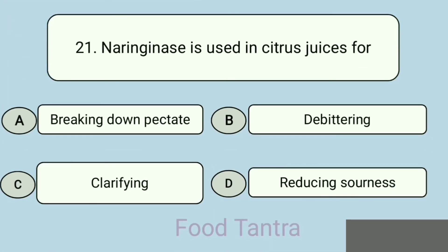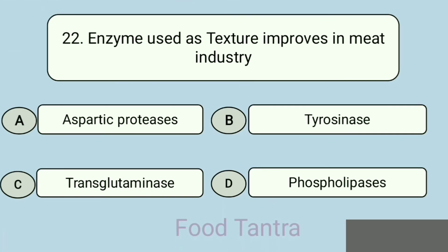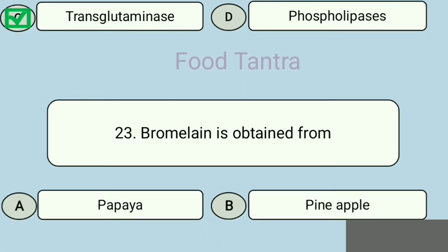Question 21: Naringinase is used in citrus juices for — Option A: Breaking down pectate. Option B: Debittering. Option C: Clarifying. Option D: Reducing sourness. Question 22: Enzyme used as texture improver in the meat industry — Option A: Aspartic proteases. Option B: Tyrosinase. Option C: Transglutaminase. Option D: Phospholipases. Correct answer: Transglutaminase.